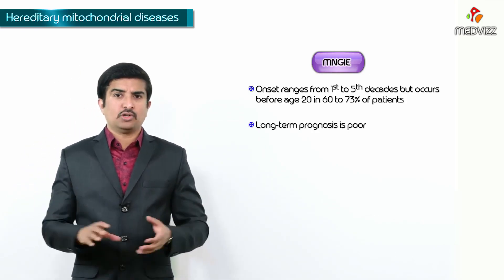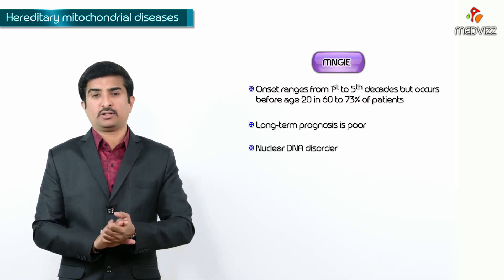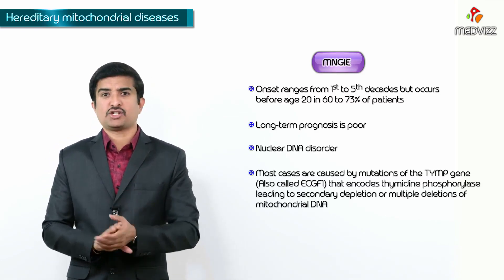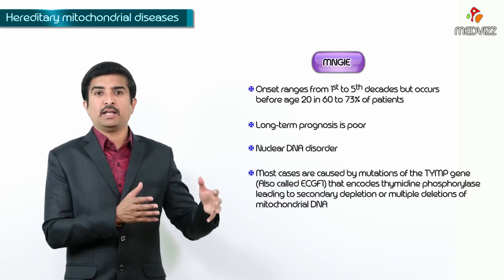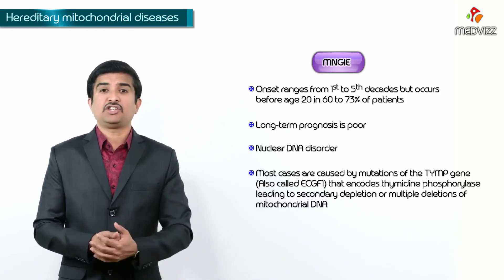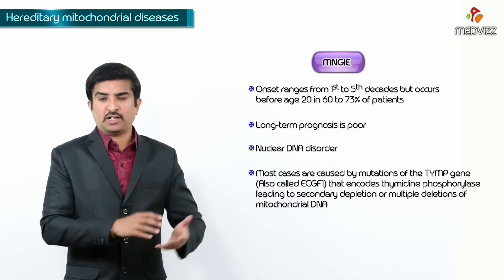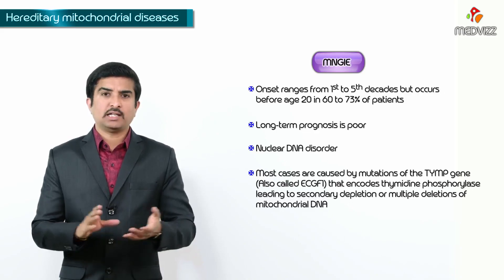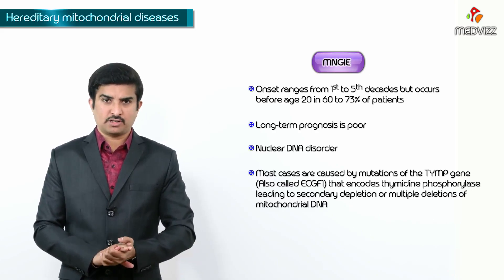The overall long-term prognosis is poor. MNGIE is a nuclear DNA disorder rather than a mitochondrial DNA disorder. Most cases are caused by mutations in the TYMP gene, which encodes thymidine phosphorylase, leading to secondary depletion or multiple deletions of mitochondrial DNA. This completes our discussion of the important mitochondrial diseases and myopathies associated with mitochondrial dysfunction and mutations.